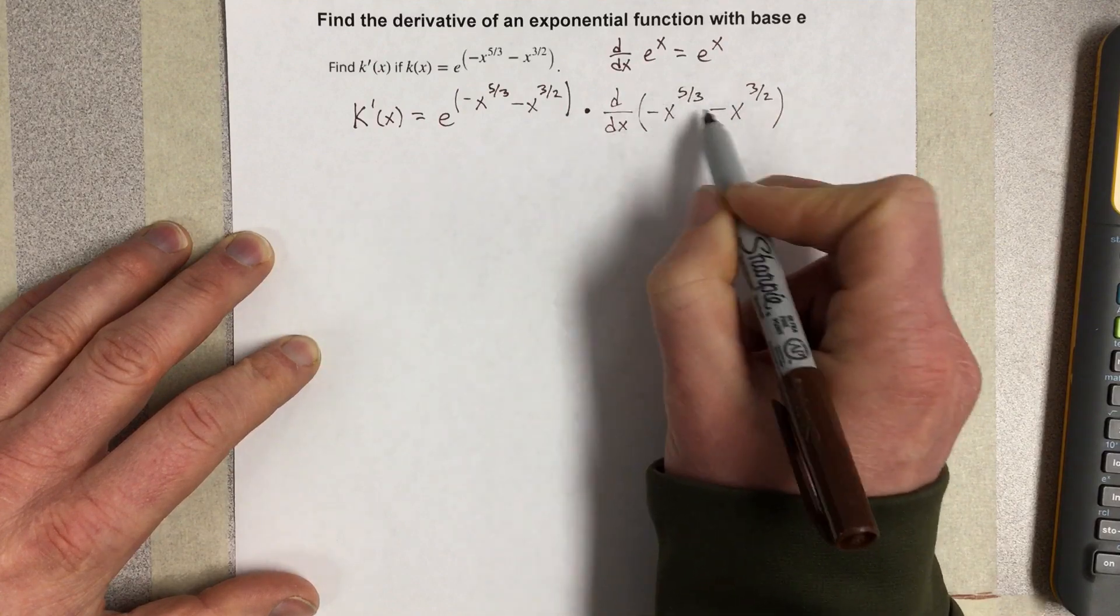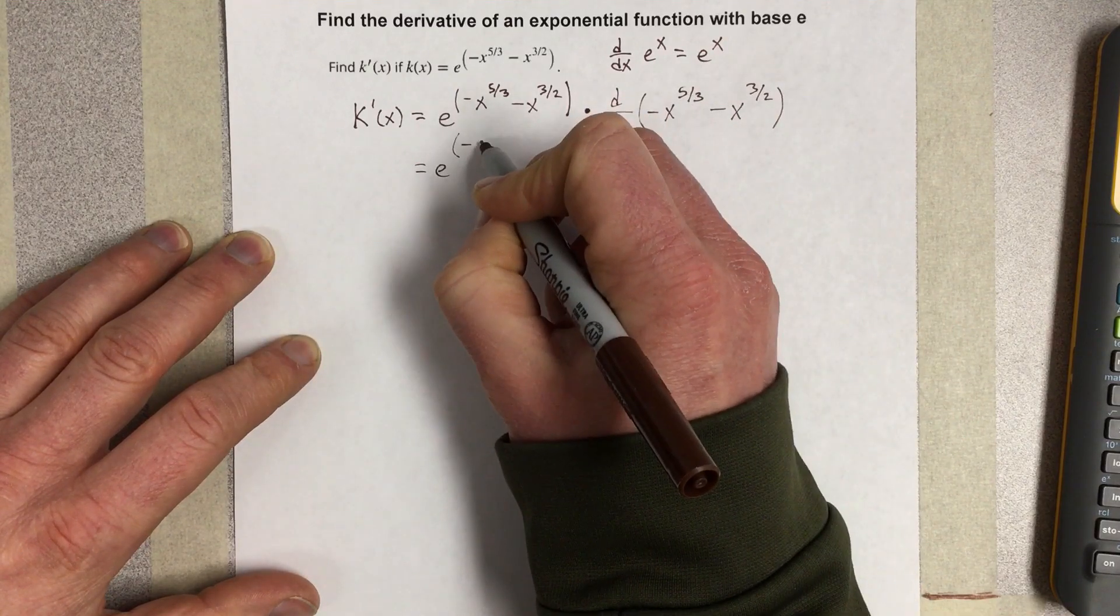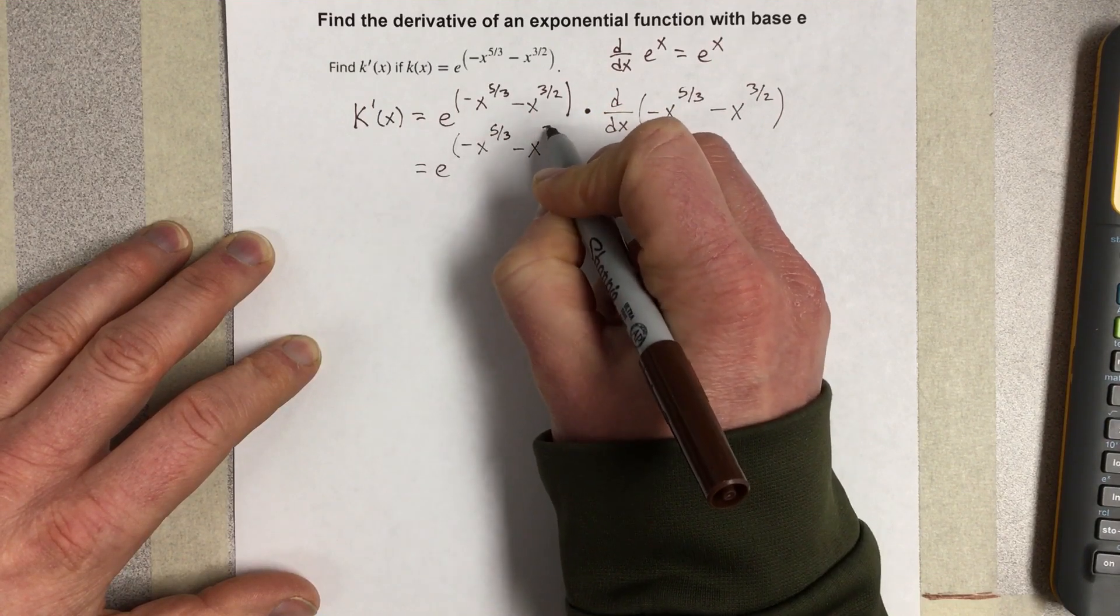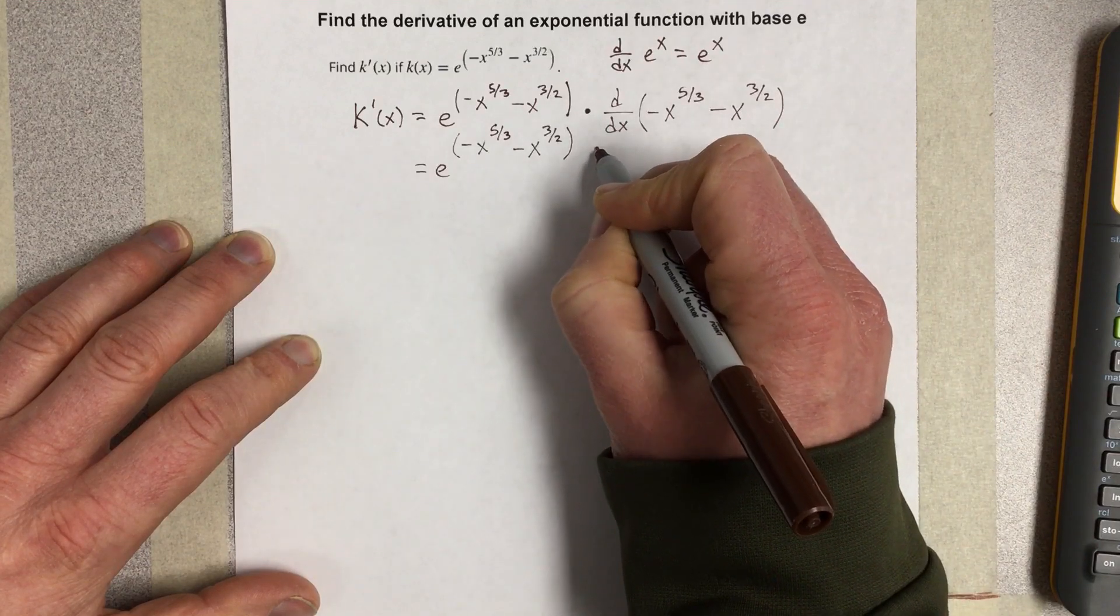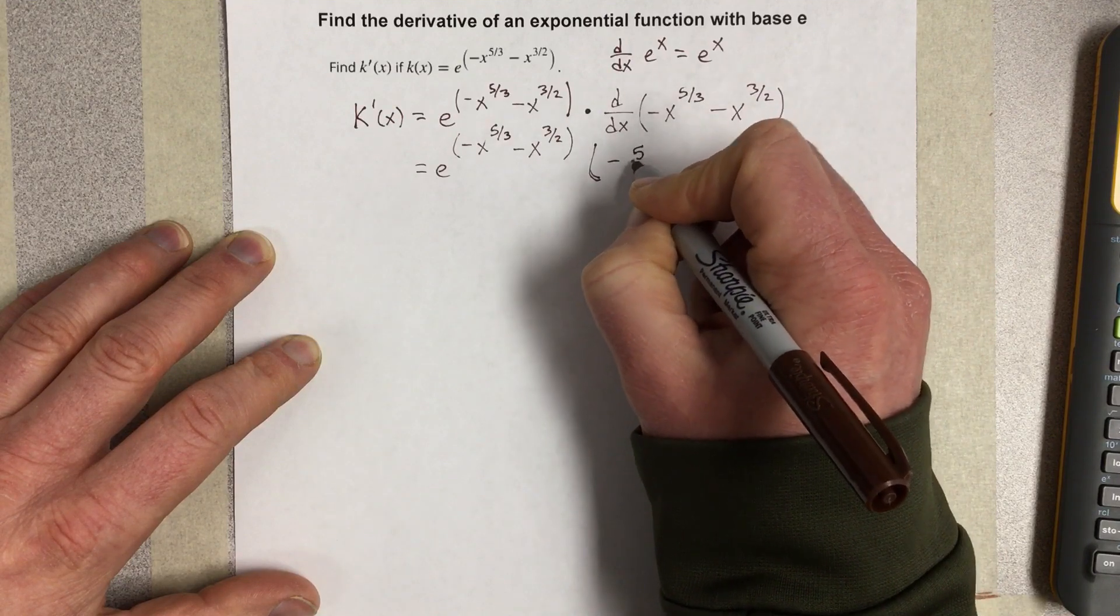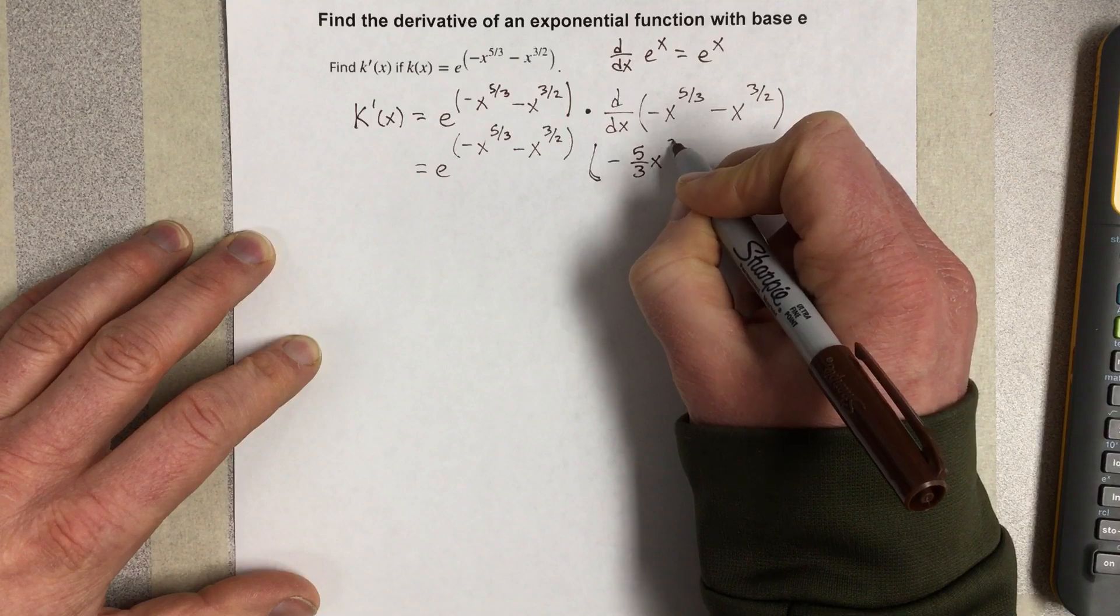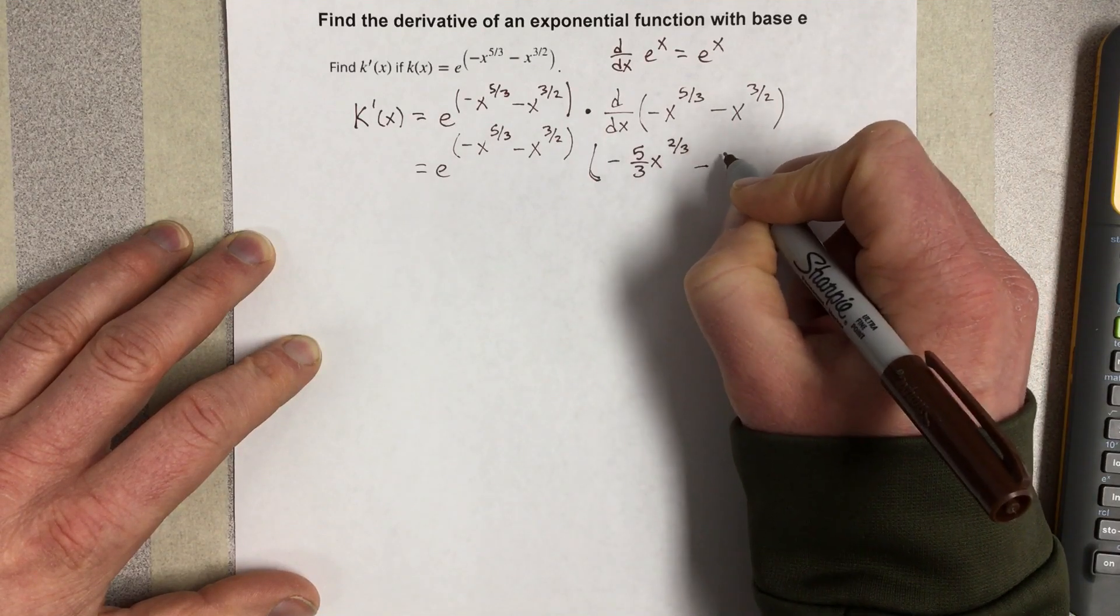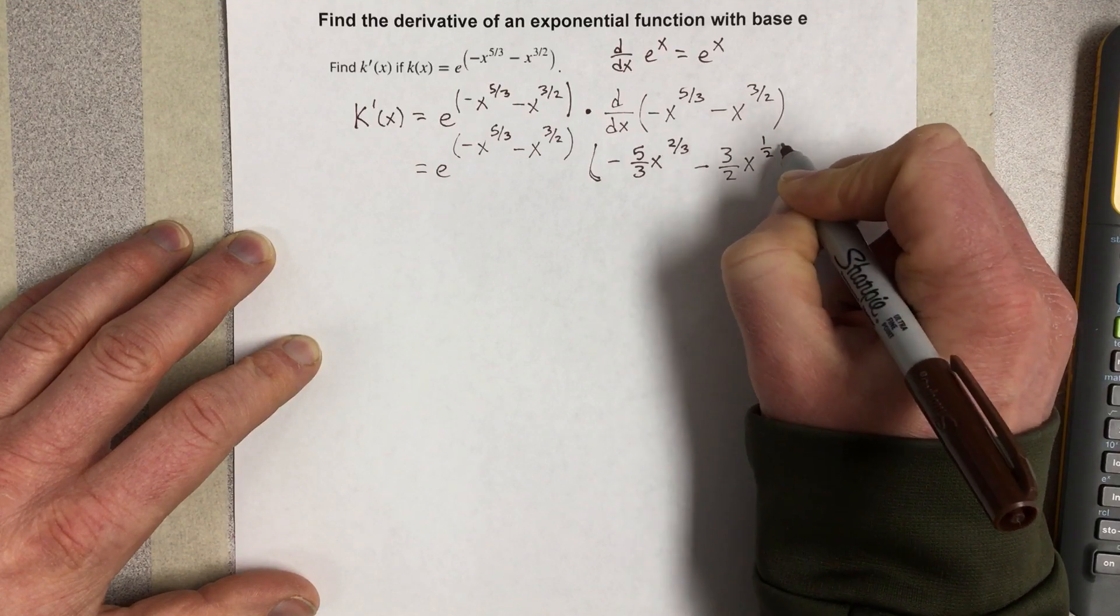If I do this derivative here I end up with e to the negative x to the 5 thirds minus x to the 3 halves. And then that would be multiplied times the derivative here which would be negative 5 thirds x to the 2 thirds minus 3 halves x to the 1 half when you subtract 1 from that.